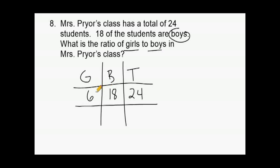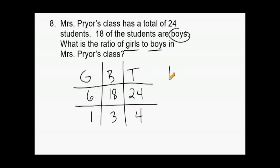The greatest common factor of 6 and 18 is 6. Six goes into 6 one time and into 18 three times, giving a simplified ratio of 1 to 3. So there is one girl for every three boys in Mrs. Pryor's class.